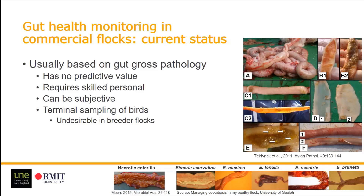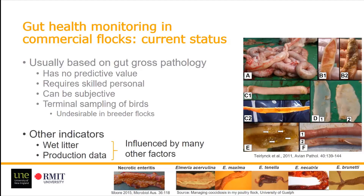It also requires terminal sampling of birds, which is undesirable especially if you have breeder flocks. On top of these gut lesions, you have other indicators such as wet litter and production data, but those factors are influenced by many other things and are not specific to gut health.